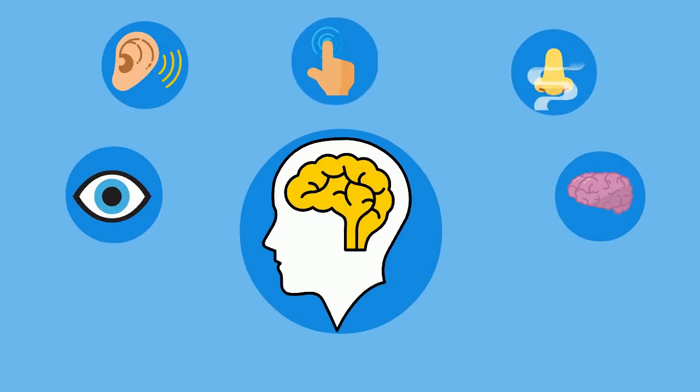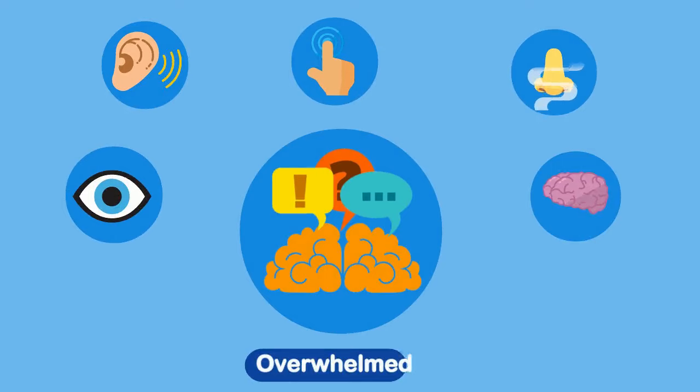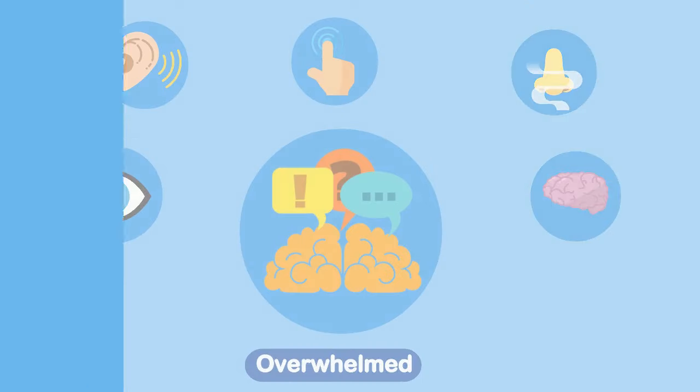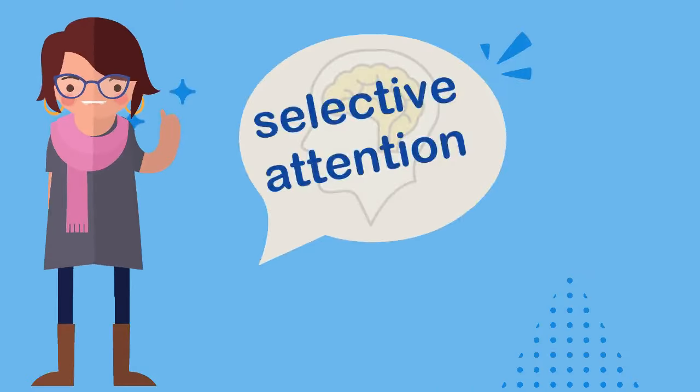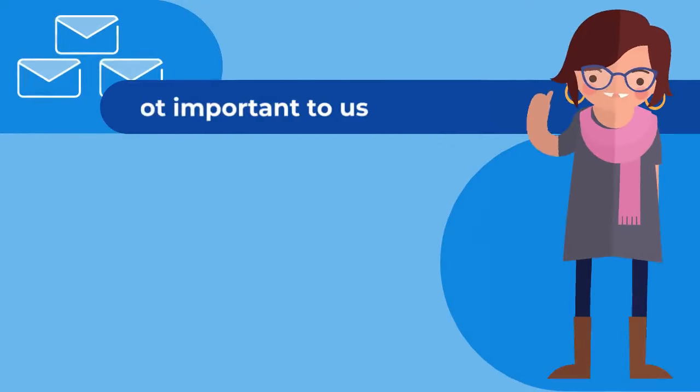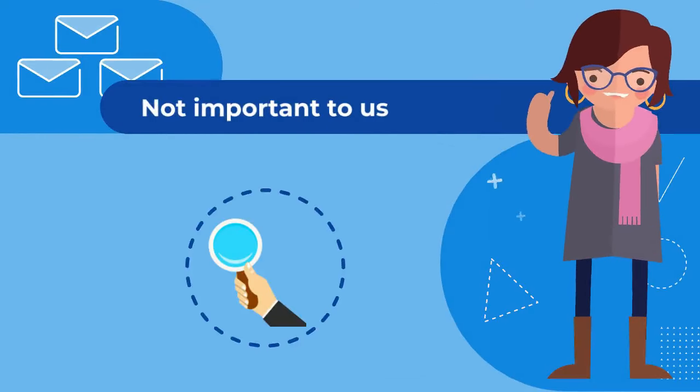When our short-term memory experiences a large number of senses, it can become overwhelmed. When this happens, we use a process called selective attention. This filters out the messages that are not important to us, allowing us to focus on those that are.